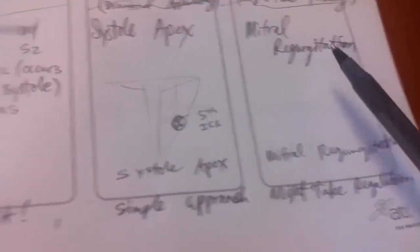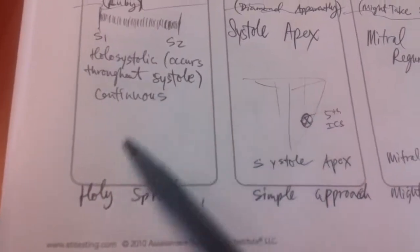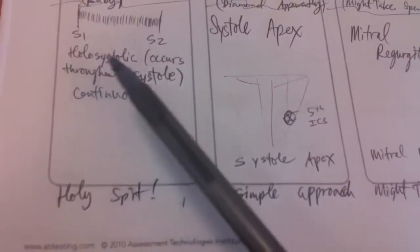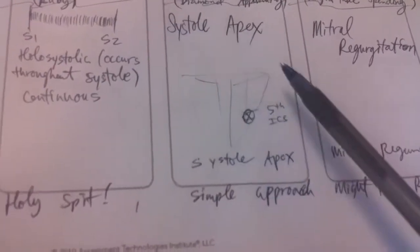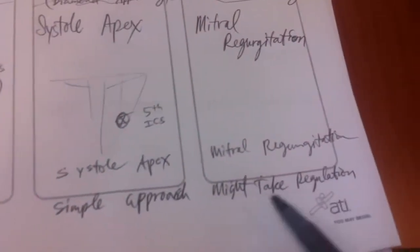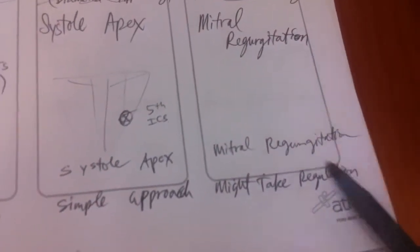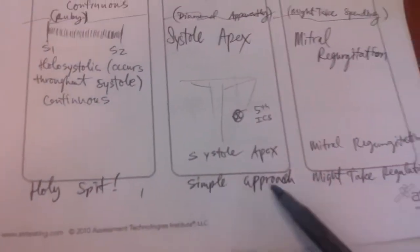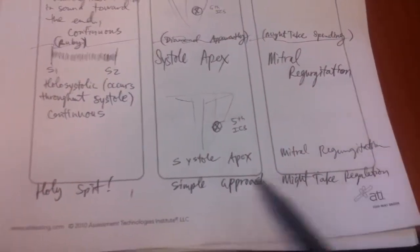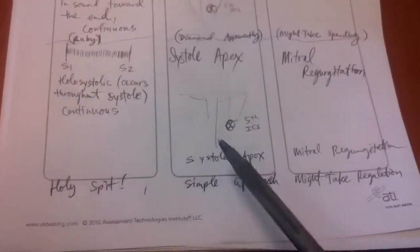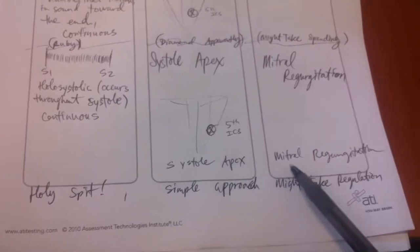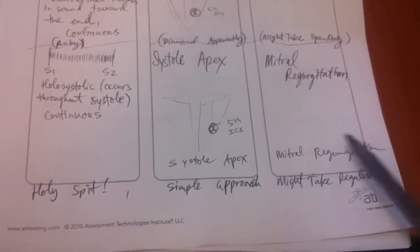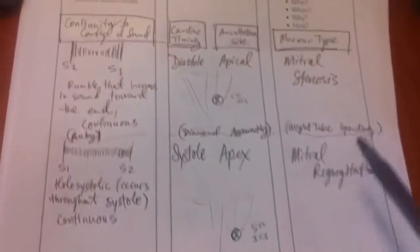To remember mitral regurgitation, use the mnemonic 'Holy Spit The Simple Approach Might Take Regulation' — Holosystolic, Simple approach, Apex, Systole, Mitral Regurgitation. So comparing both: mitral regurgitation is holosystolic at the apex during systole, versus mitral stenosis which is a rumble during diastole.